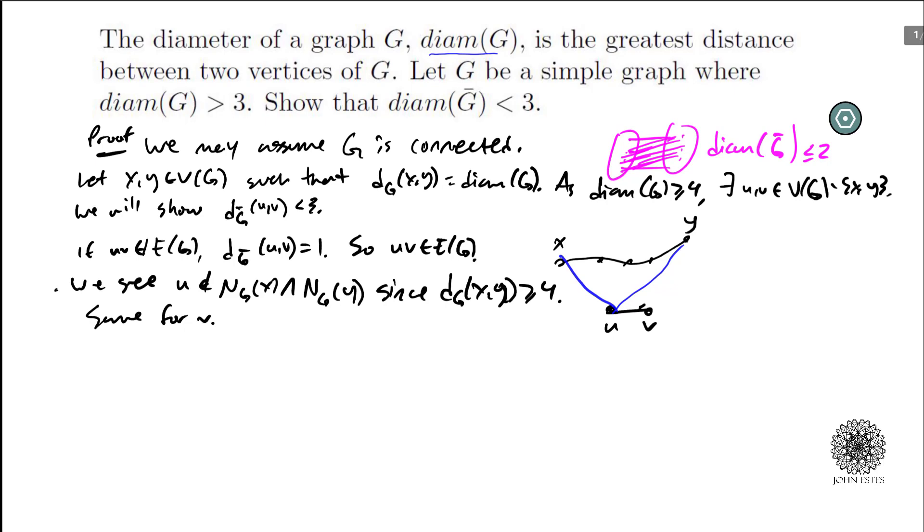Now another thing that, piece of information we're going to gather is, note if X is not in the intersection of the neighborhoods of U and V, so in other words, if X is not adjacent to both of these guys, then the distance between U and V equals 2 in the complement. Why? Because U, X, V is a path in G prime.